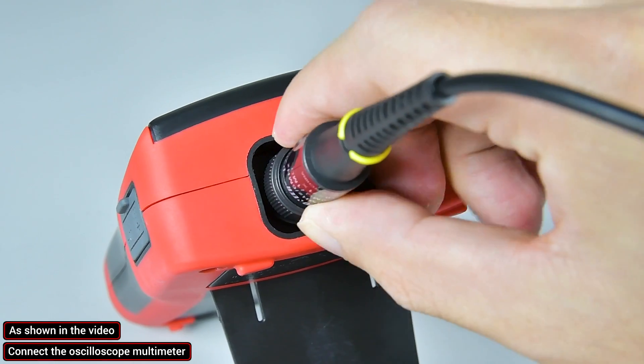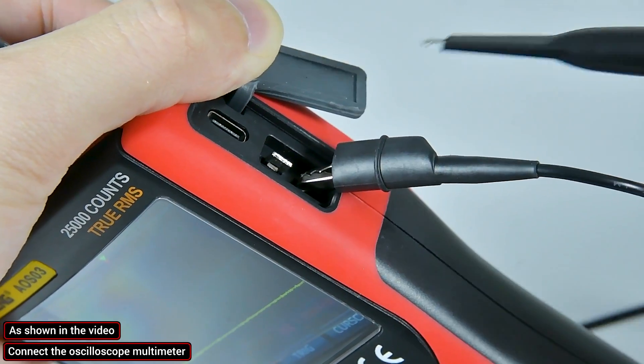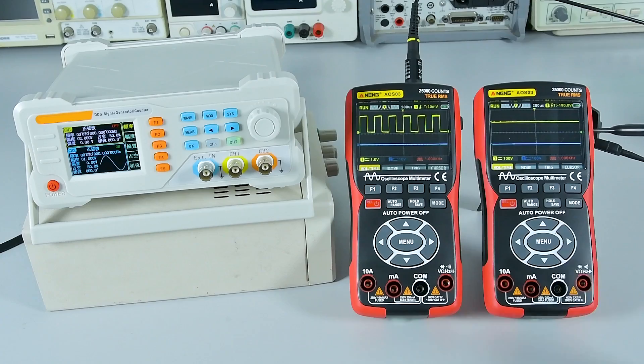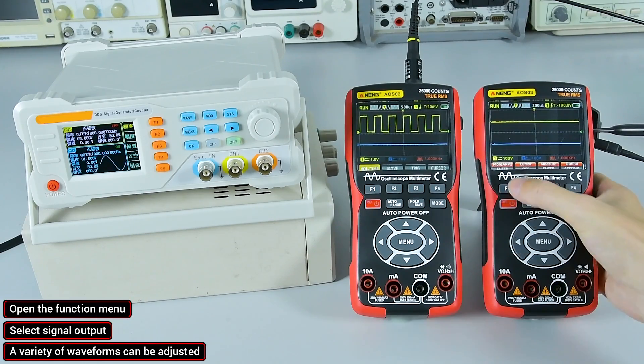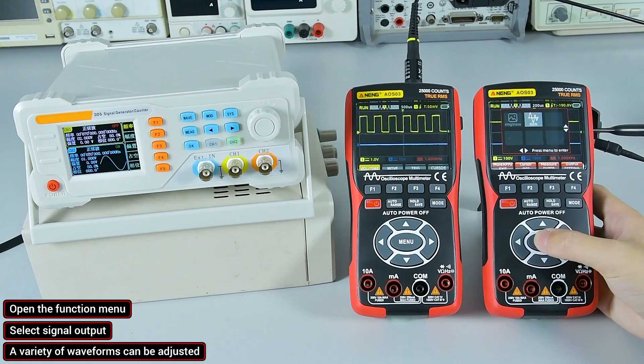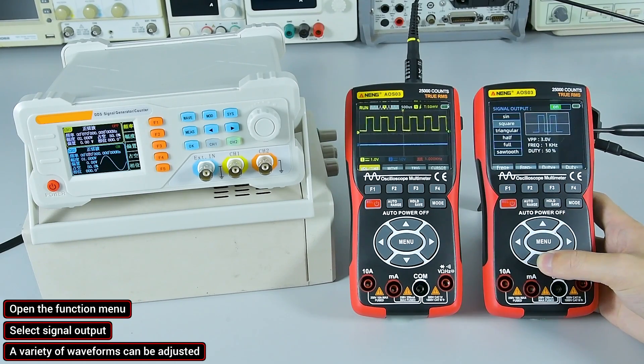Connect the oscilloscope multimeter as shown in the video. Open the function menu. Select signal output. A variety of waveforms can be adjusted.